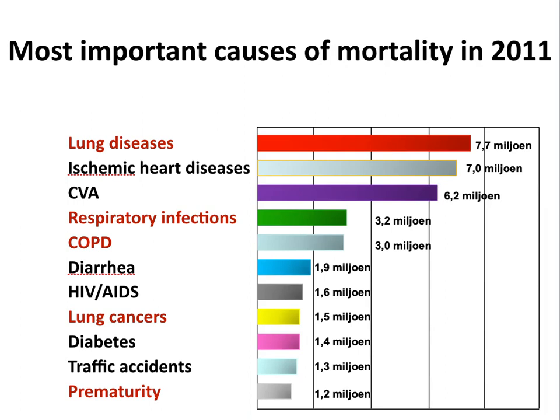Usually I have to sell people on the idea that lung diseases are important. But during this corona crisis that we're going through at the moment, I don't think I have to explain that lung diseases can be really bad. Actually, the biggest killer in the world are lung diseases. This is a slide from the WHO with the most important causes of mortality in 2011. If you add up all the diseases that can affect the lung — respiratory infections, COPD, lung cancers, and also prematurity — children born too early, if they die, it's usually because of underdeveloped lungs.